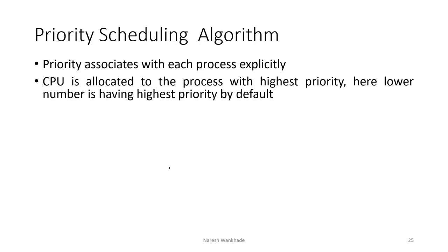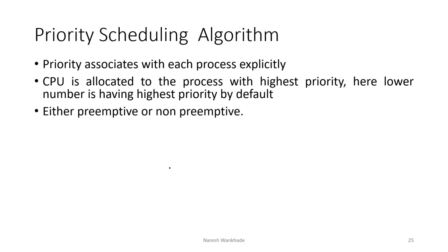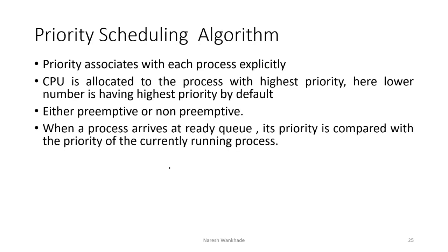If it is mentioned that the highest priority will be given to the higher number, in that case you have to solve the problem based on the mentioned data. But by default, lower number has the highest priority. It is either preemptive or non-preemptive type of scheduling algorithm. When a process arrives at the ready queue, its priority is compared with the priority of the currently running process.